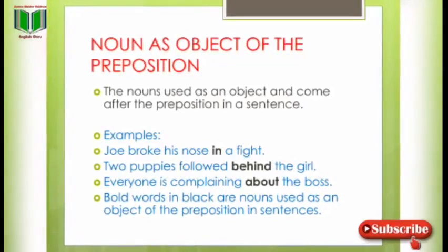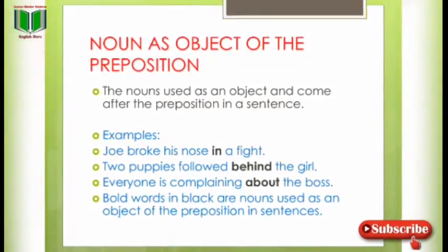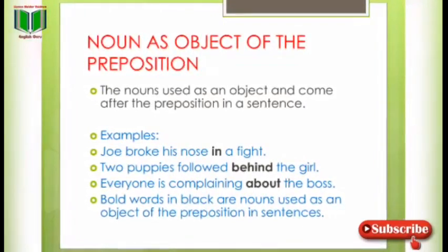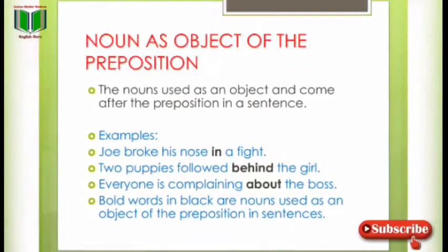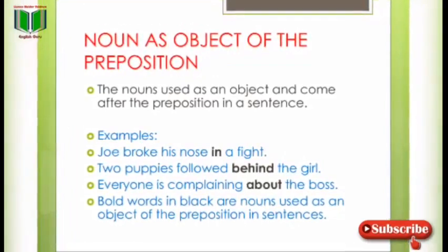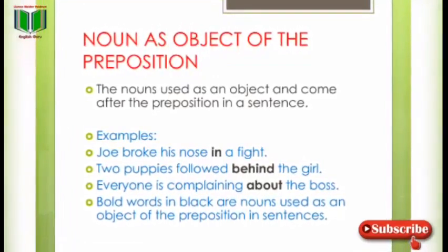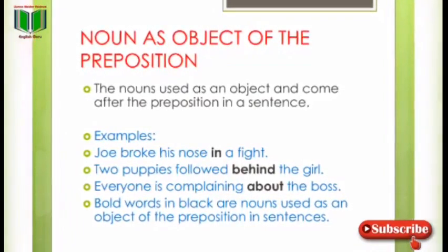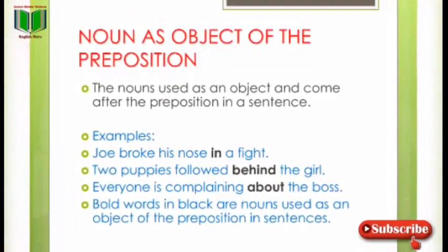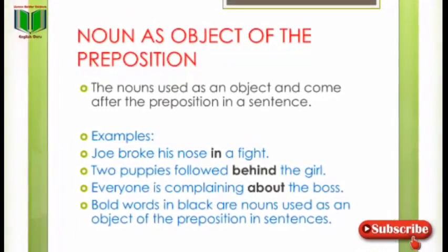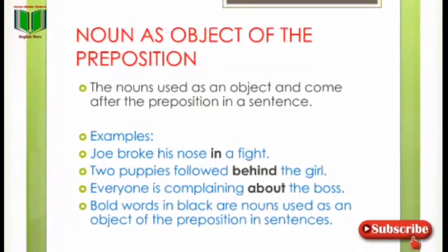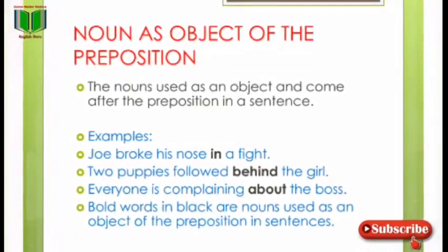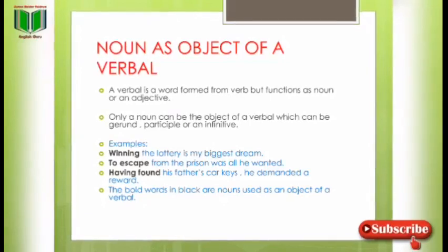Noun as object of the preposition — nouns used as an object that come after the preposition in a sentence. Noun جو ہے وہ object کے طور پہ use ہوتا ہے لیکن preposition کے بعد آتا ہے۔ Examples: 'Joy broke his nose in a fight.' 'Two puppies followed behind the girl.' 'Everyone is complaining about the boss.' Bold words are nouns used as object of the preposition.